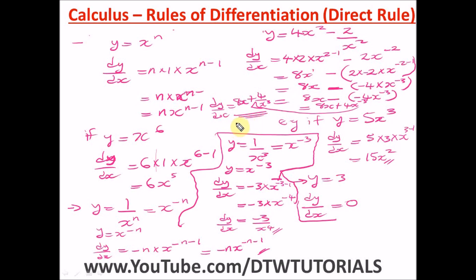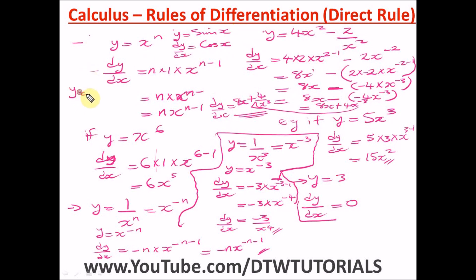For trigonometric functions, it's quite straightforward. When y = a·sin x, then dy/dx = a·cos x. When y = a·cos x, then dy/dx = −a·sin x. These are the derivatives of your basic trigonometric functions under the direct rule.